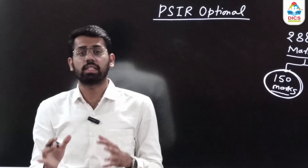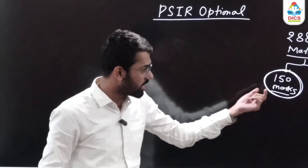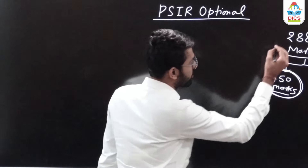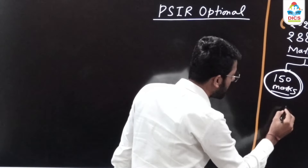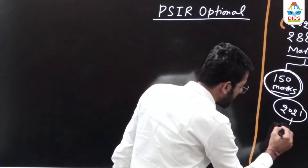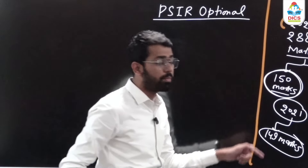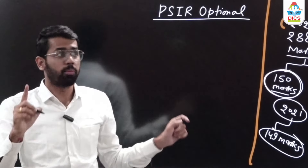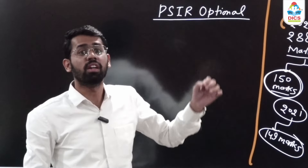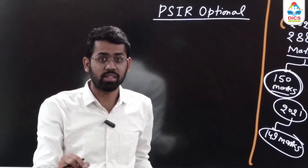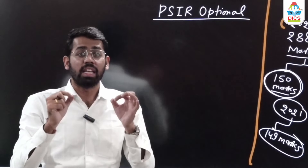A 60% score in UPSC optional is exceptional. This was not just in 2022 — similarly in 2021, I scored 149 marks in PSIR Paper 1, consistently around 150, and 124 marks in Paper 2. So here I am going to teach you how to approach PSIR optional and how you can also achieve one of the highest scores.